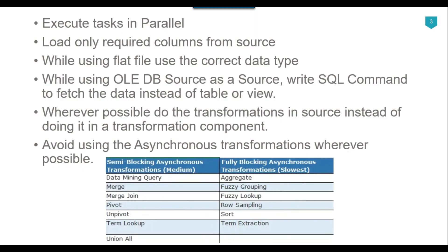Avoid using asynchronous transformations wherever possible. Asynchronous transformations do not release rows as they are read from the source — they hold all rows before passing them on. Fully blocking asynchronous transformations include the sort transformation. If you are selecting data from a SQL Server table and need to sort it, you should try to use an ORDER BY clause in the source query itself to avoid using the sort transformation.